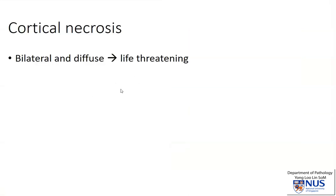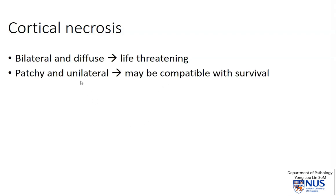Cortical necrosis of the kidney may be bilateral and diffuse, in which case it is life-threatening and the patient will present with complete anuria and then severe uremia. Sometimes it may be patchy and unilateral, in which case the patient may actually survive the event, giving rise to cortical thinning and scarring.